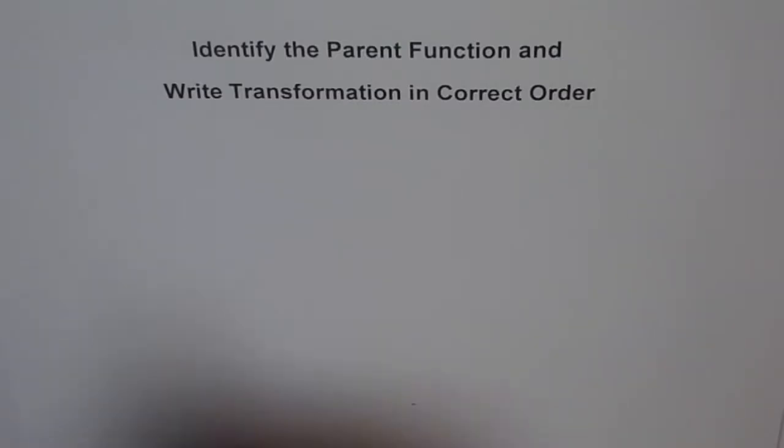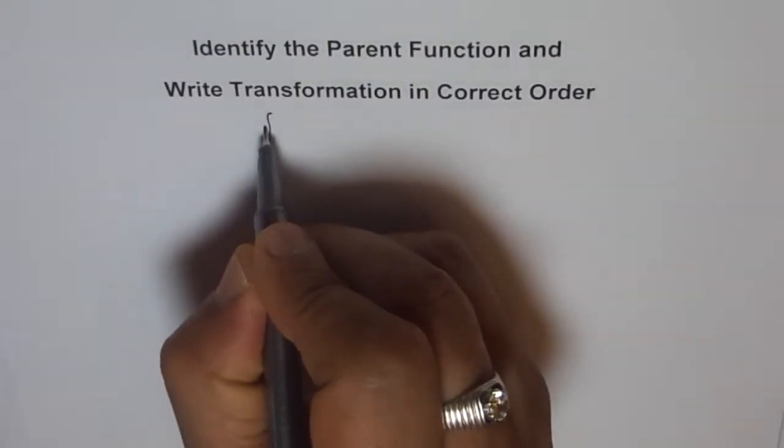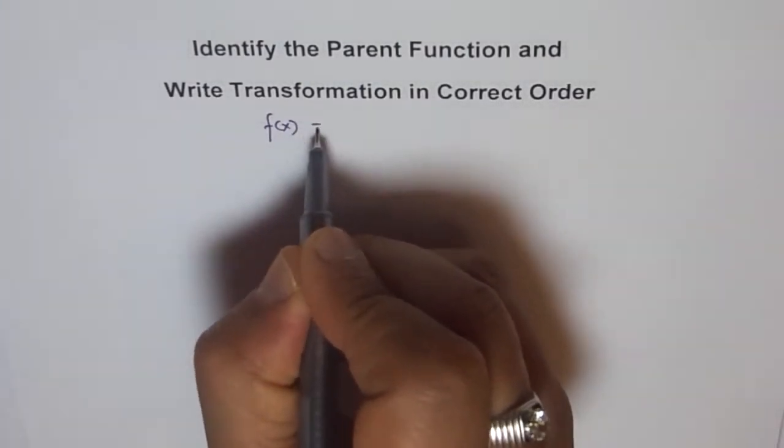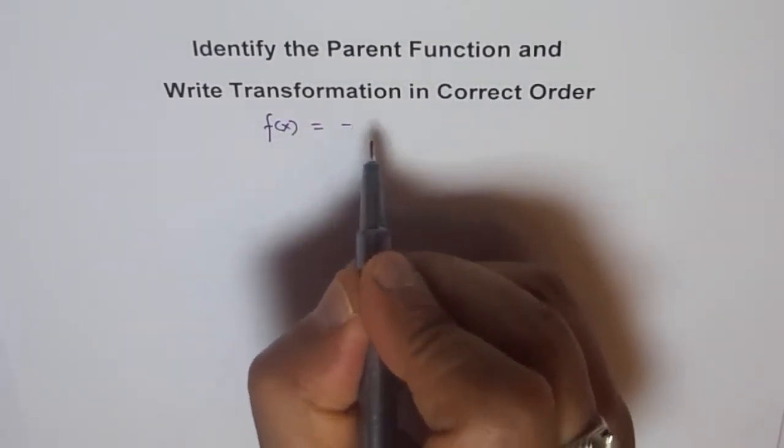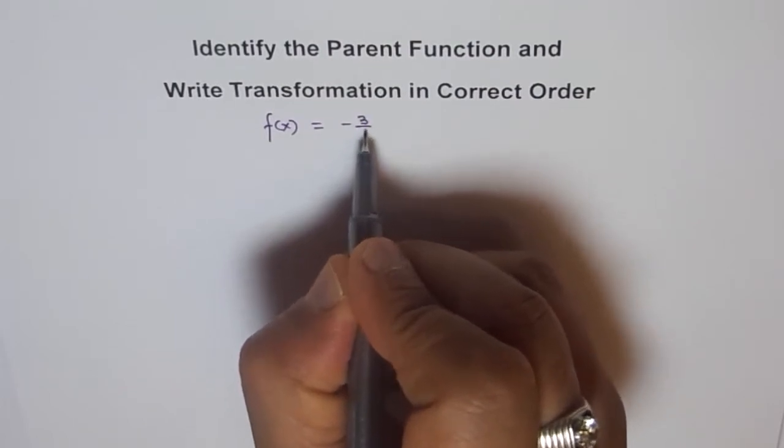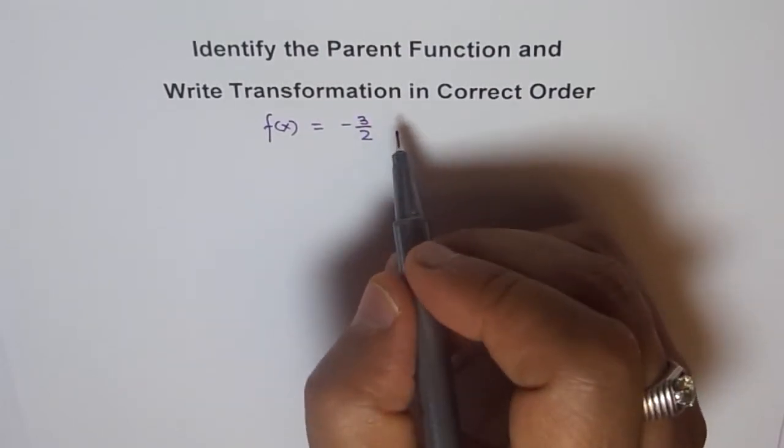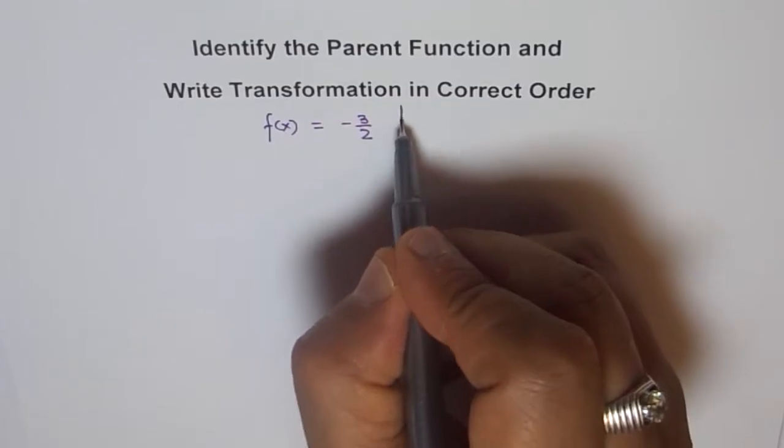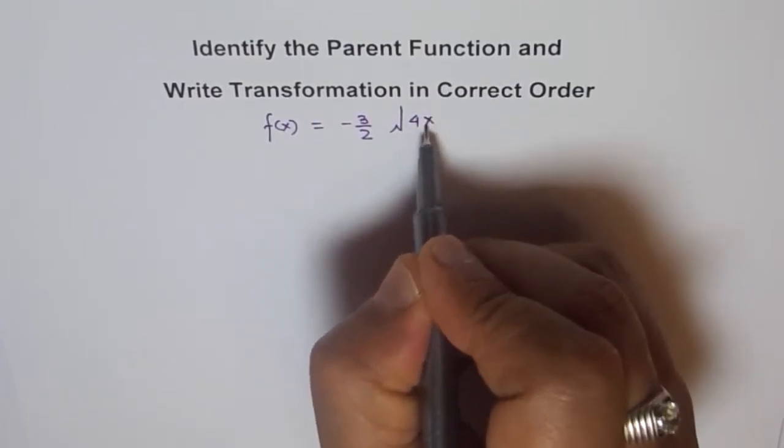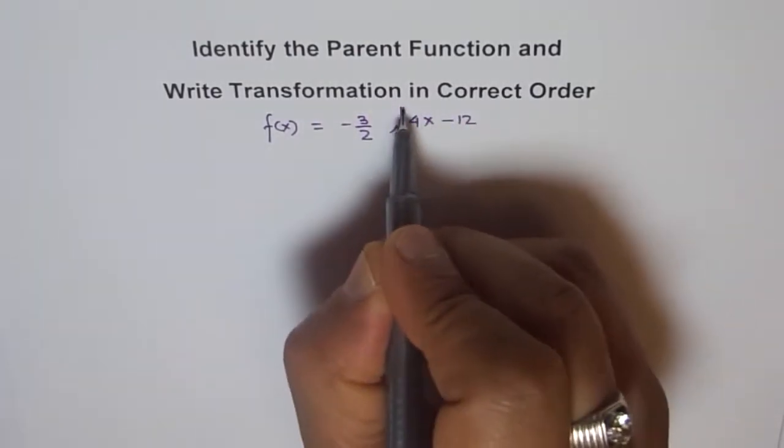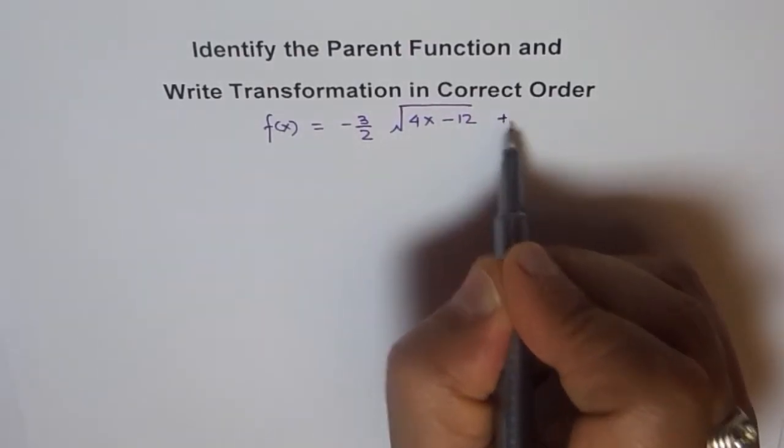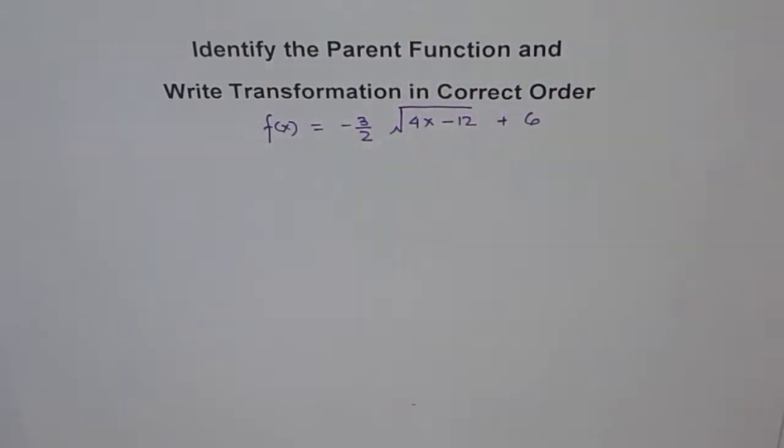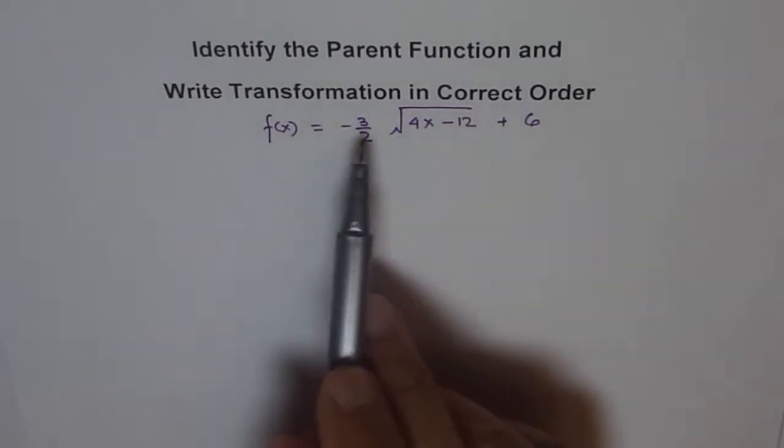So let me first take an example. Let's say my transform function is f(x) equals minus 3 over 2 square root of 4x minus 12 plus 6. This is my transform function and I am supposed to write its transformation in correct order.